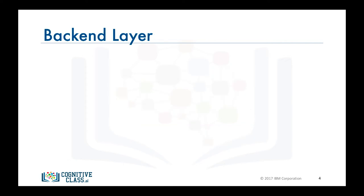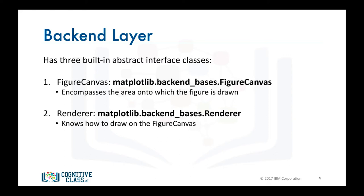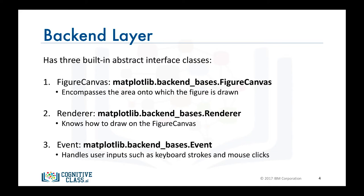The backend layer has three built-in abstract interface classes. FigureCanvas, which defines and encompasses the area on which the figure is drawn. Renderer, an instance of the renderer class that knows how to draw on the figure canvas. And finally, Event, which handles user inputs such as keyboard strokes and mouse clicks.